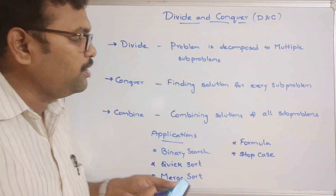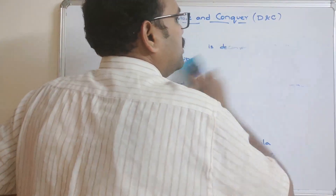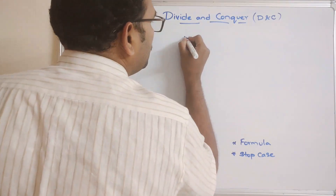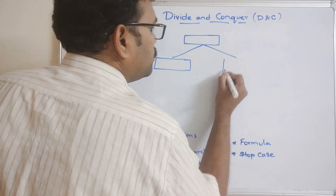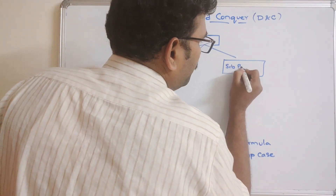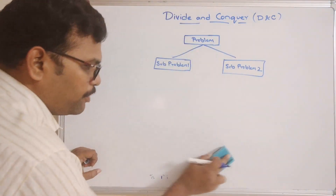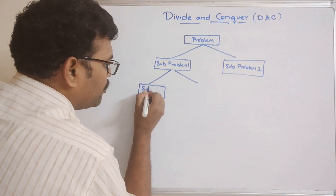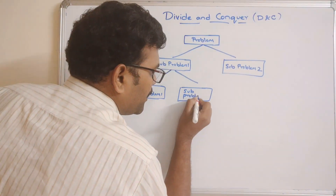I will draw a simple diagrammatic representation of these three parts. One advantage is that complex problems can be easily solved using divide and conquer. For example, a complete problem is divided into sub-problem 1 and sub-problem 2. Based upon the formula and the stop case, each sub-problem can be further divided.